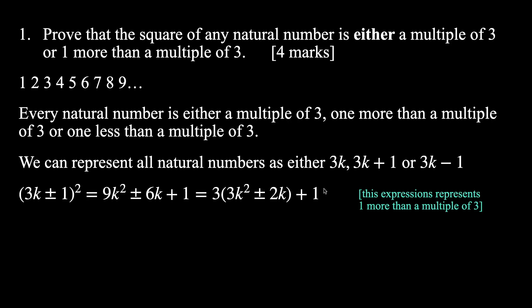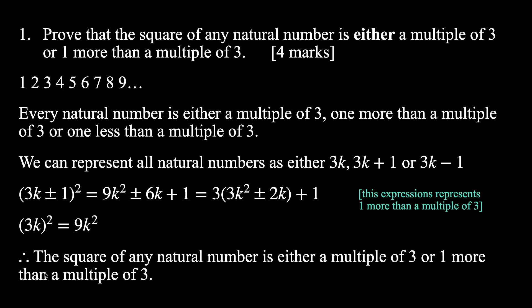That covers the case where a natural number is one more or one less than a multiple of three. What if we have a multiple of three and we square it? That's pretty straightforward — we'd have (3k)² = 9k², which is clearly a multiple of three. Going back to the question, we need to show it's either a multiple of three or one more than that, and we've done that. Therefore, the square of any natural number is either a multiple of three or one more than a multiple of three.